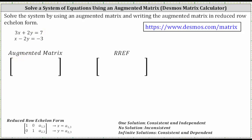Looking at the first equation, the coefficient of x is three, the coefficient of y is two, and the constant term on the right is seven. Therefore, the first row in the augmented matrix is three, two, seven.